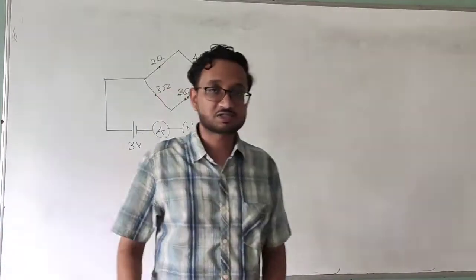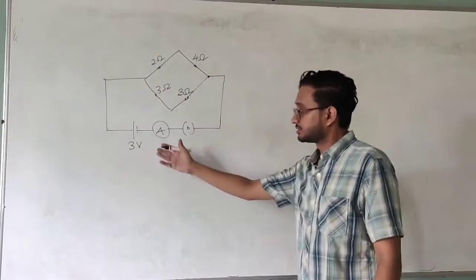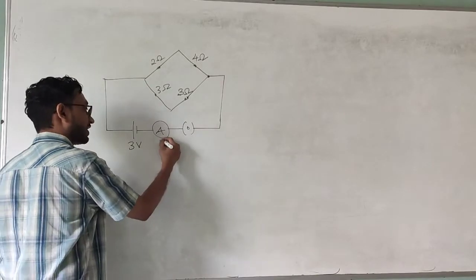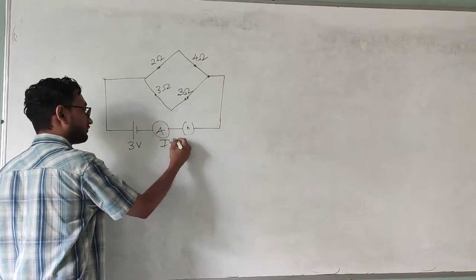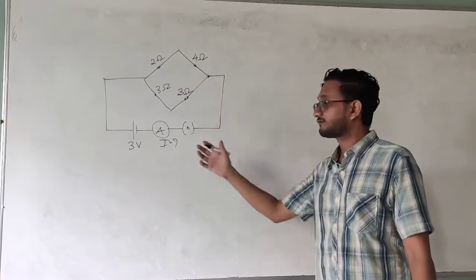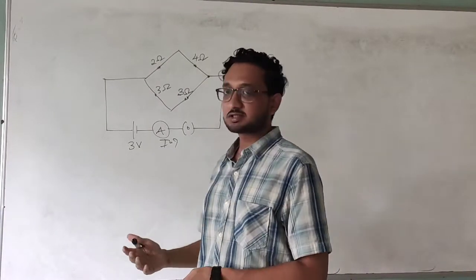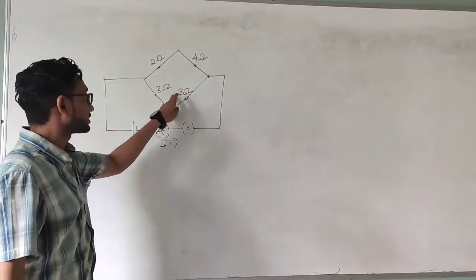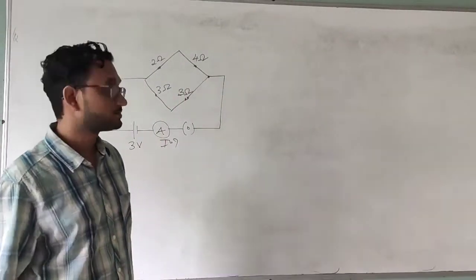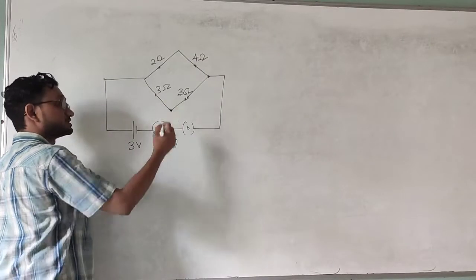We have four resistors connected in such a way, with a battery or cell of three volts, and you are supposed to find the reading of the ammeter — that means you have to find the current flowing in the circuit. To do that, you will need to find the total resistance of the circuit.